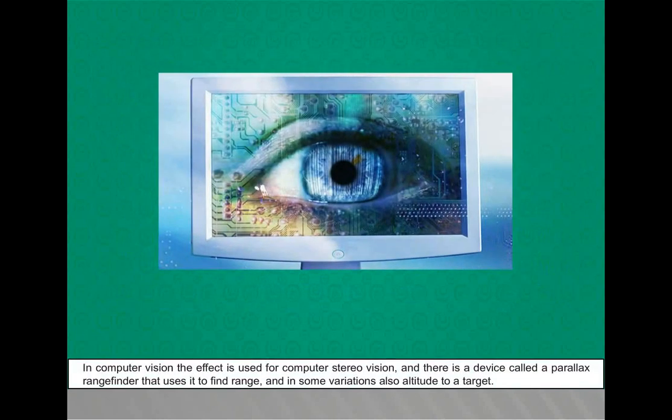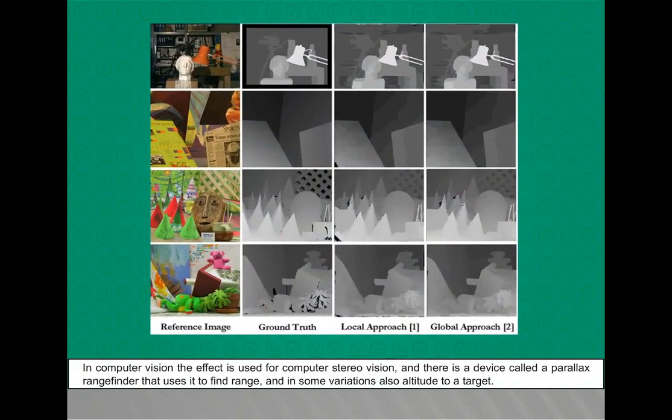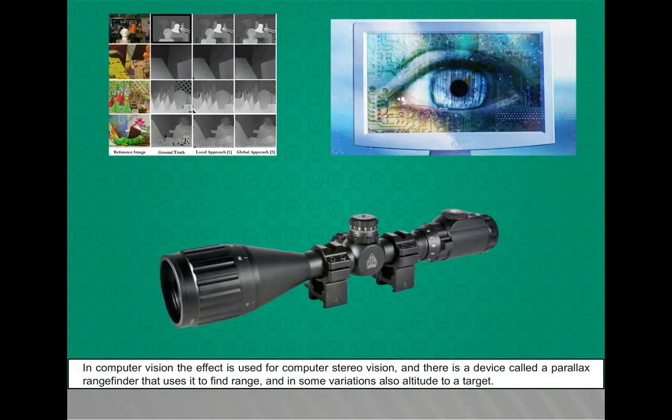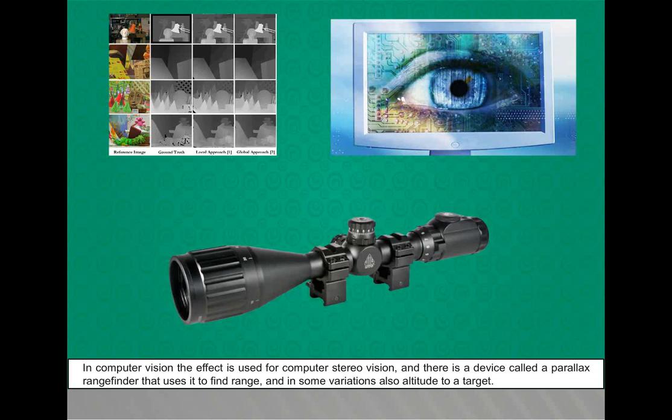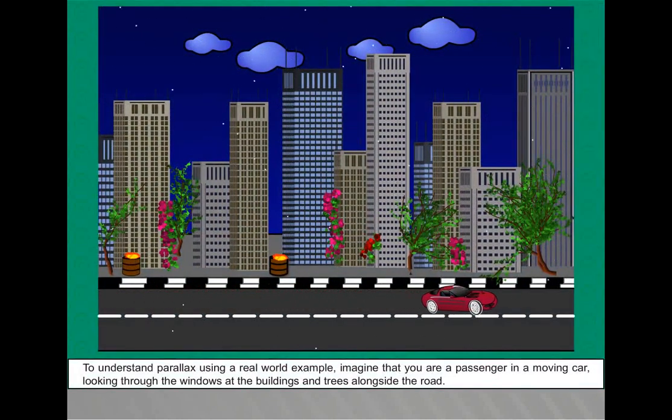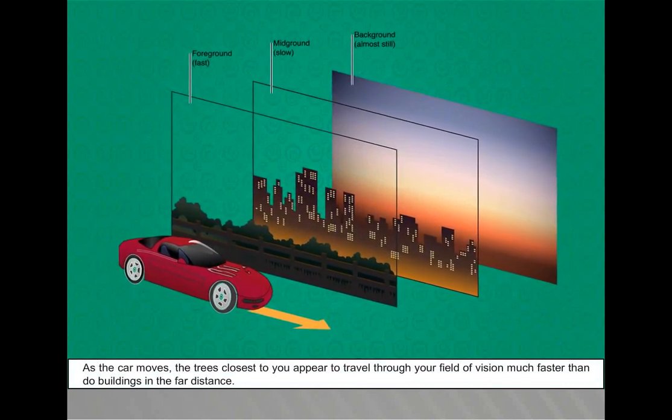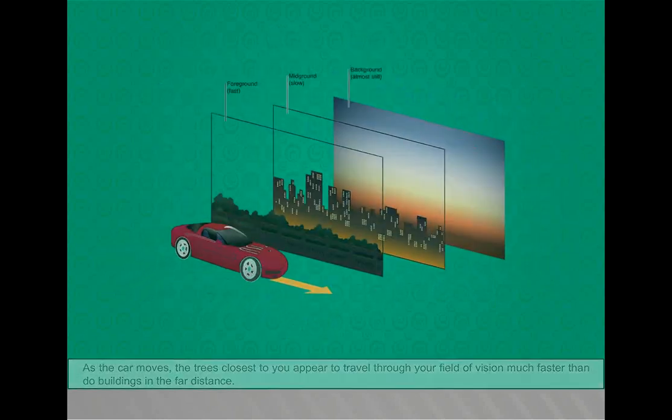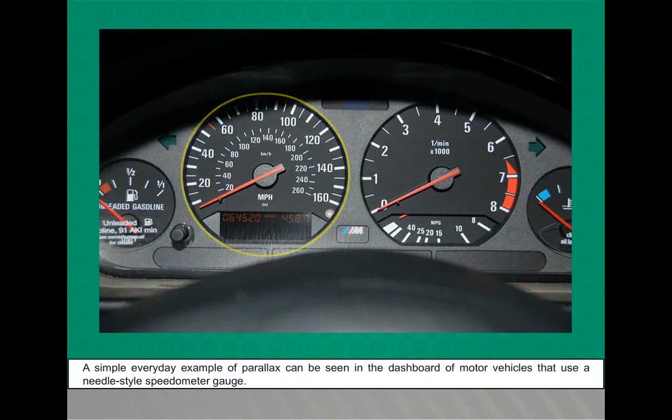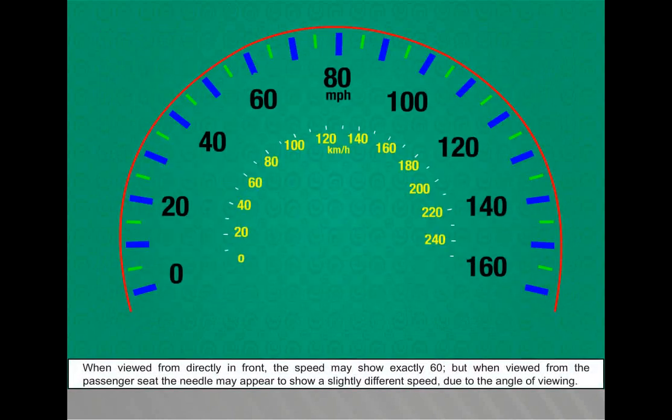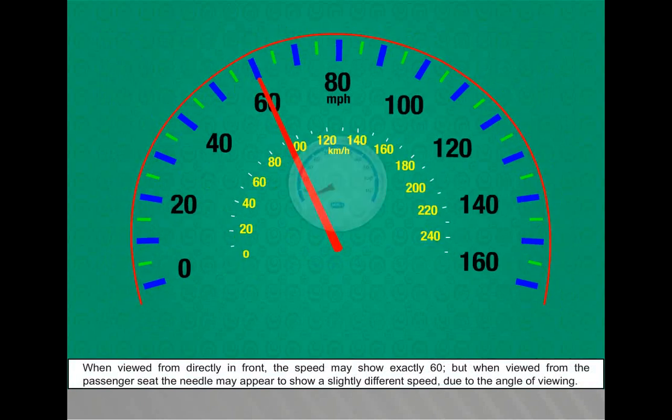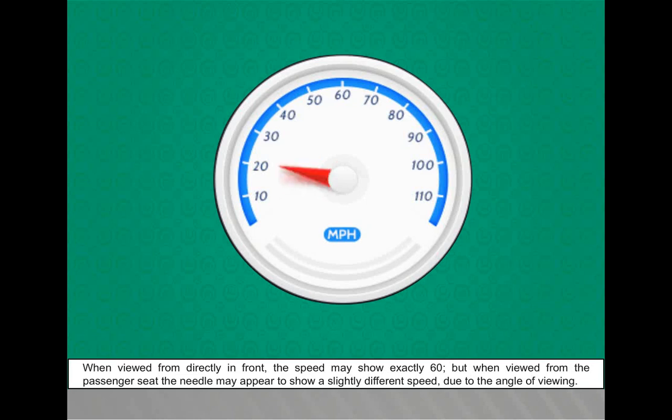In computer vision, the effect is used for computer stereo vision, and there is a device called a parallax range finder that uses it to find range, and in some variations also altitude, to a target. To understand parallax using a real-world example, imagine that you are a passenger in a moving car looking through the windows at the buildings and trees alongside the road. As the car moves, the trees closest to you appear to travel through your field of vision much faster than do buildings in the far distance. A simple everyday example of parallax can be seen in the dashboard of motor vehicles that use a needle-style speedometer gauge. When viewed from directly in front, the speed may show exactly 60, but when viewed from the passenger seat, the needle may appear to show a slightly different speed due to the angle of viewing.